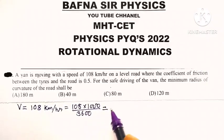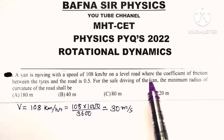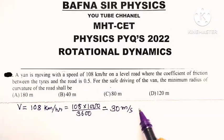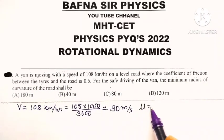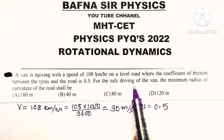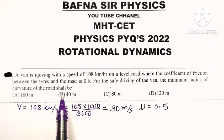This becomes equal to 30 meter per second. The coefficient of friction between the tires and road is 0.5, meaning μ equals 0.5. For safe driving of the van, we need to find the minimum radius of curvature.